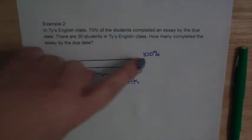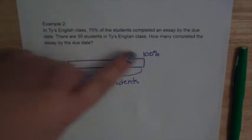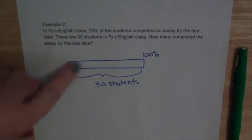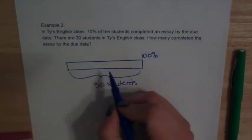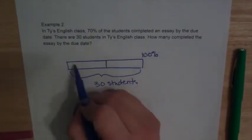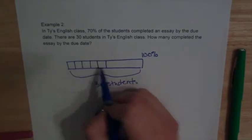Well, counting by 10s might be a good idea, because these both share a factor of 10. So I'm going to take my line, and I'm going to break it up into 10 as equal as possible boxes, or units.